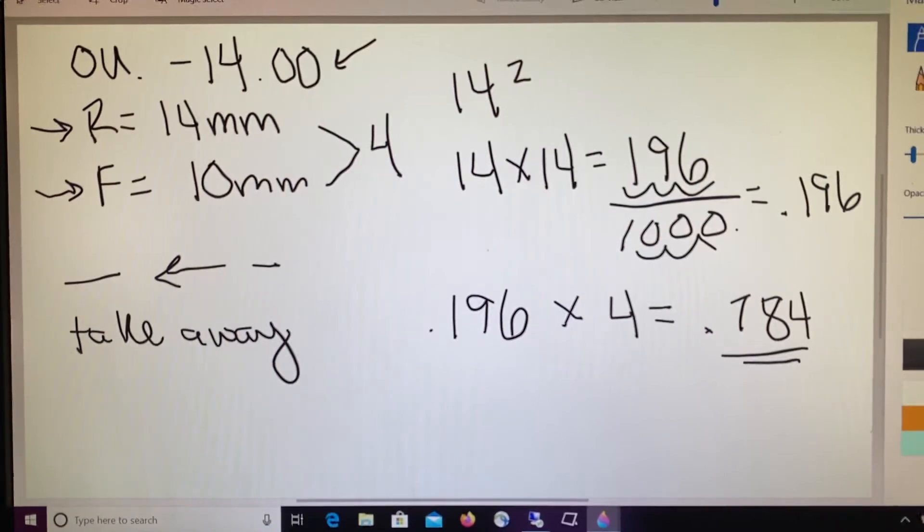We need to think about what is the closest normal prescription to 0.784, and we would say that 0.75 diopters is the closest. We're rounding to the closest eighth of a power. This is how much change needs to be made to our minus 14 lens.